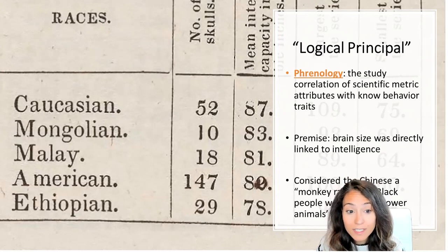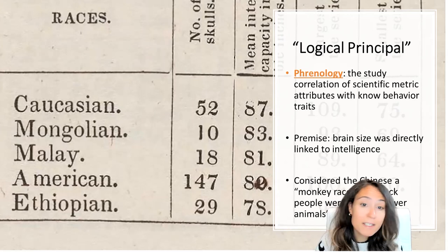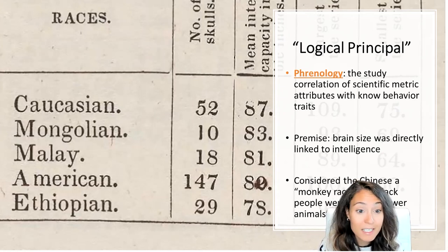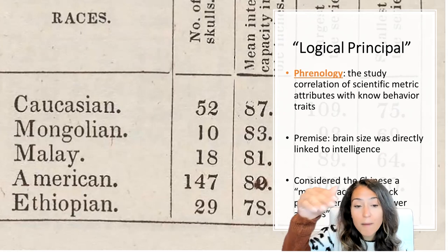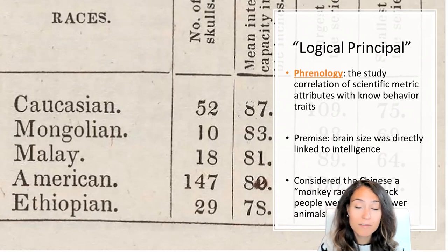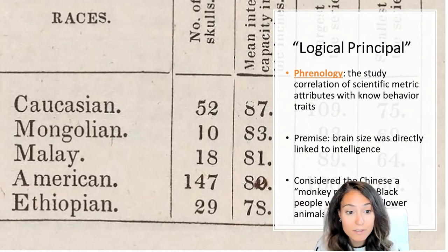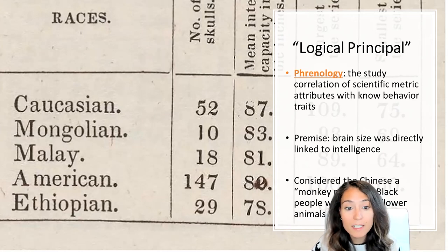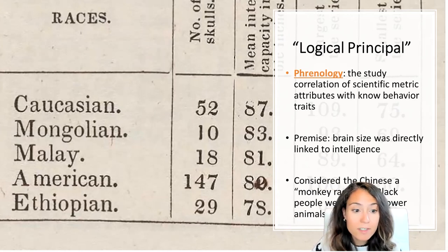Morton asserted that his skull sample fundamentally proved that Caucasians were the superior race. Specifically, he argued that Anglo-Saxons were at the top of the pile, followed by people of Jewish ancestry and then other Caucasoids like Hindus. For Morton, this hierarchy was fundamentally biblical — it was part of God's divine master plan.